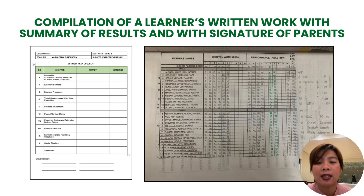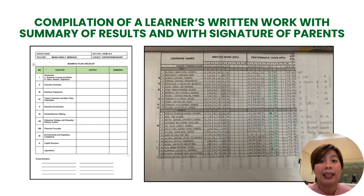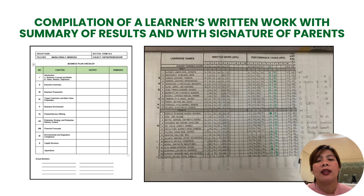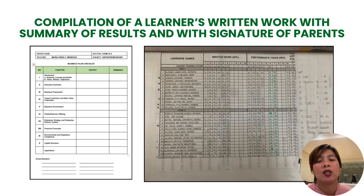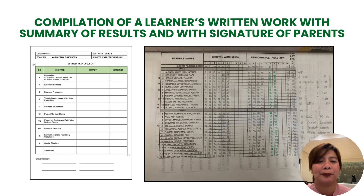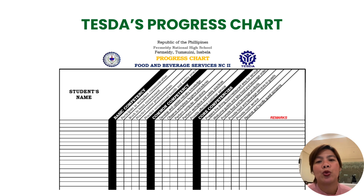I also have an output checklist — this is per quarter, so all outputs required for the quarter are listed. I tick the box if they have submitted it, and I also have a remarks column. On the fourth column there is a parent's signature, where I require my students to show their output to their parents and have it signed, so I know that the parents are also monitoring their child's progress.